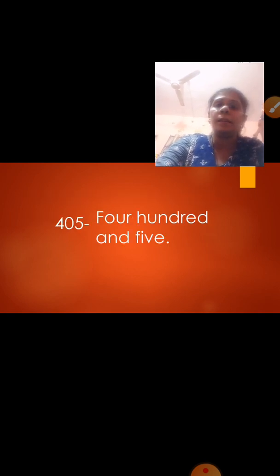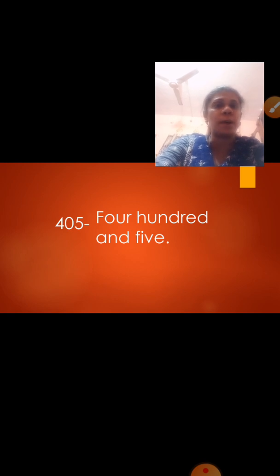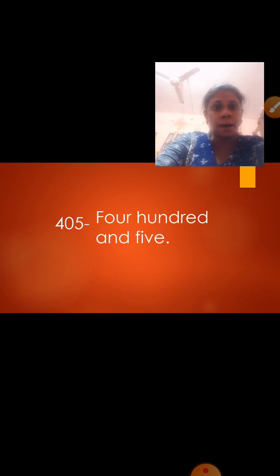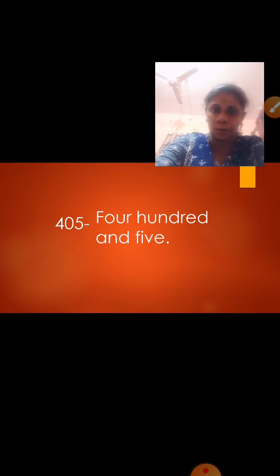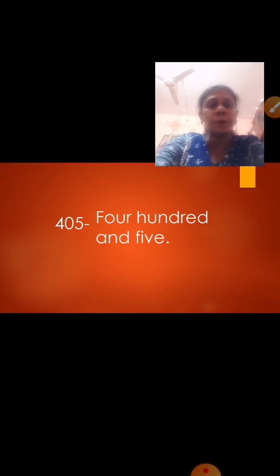The next number is 4, 0, 5. First we read from the left hand side: the first number is 400. Now in the tens place is 0, and we are not going to write 0 because 0 has no value. So we write 400 and the number in the unit place is 5. We write the spelling of four as F-O-U-R, then hundred as H-U-N-D-R-E-D, then AND as A-N-D, then five as F-I-V-E. We are not going to write the 0 spelling — 0 has no value, only the hundreds and units number.